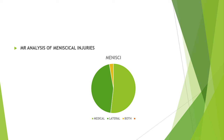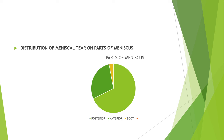MRI analysis of meniscal injury: According to this pie chart, medial meniscus injuries were more common than lateral, with both menisci also included. In terms of distribution of meniscal tear by part of meniscus, the posterior part was most commonly involved, followed by the body.